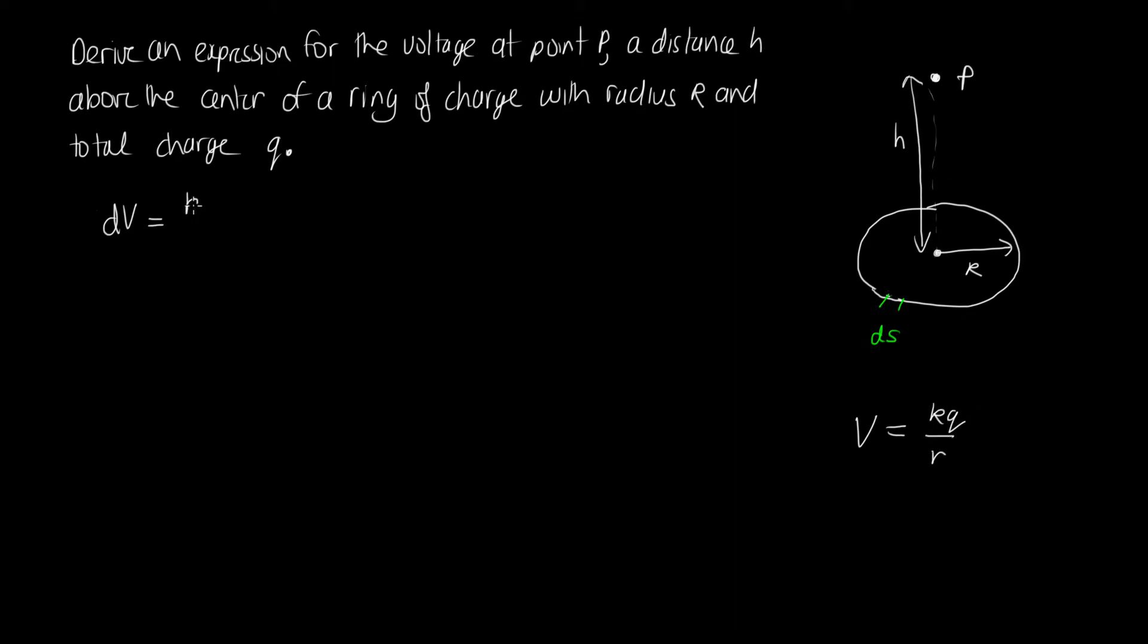In this case we've got k and we'll assume that on dS there's some charge dQ, which we don't know yet, but we'll call it dQ, the charge on dS. And then we need to divide by r, which is the distance between our point and the point where the voltage is being measured.